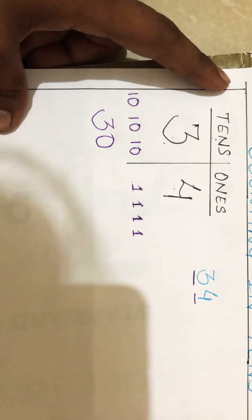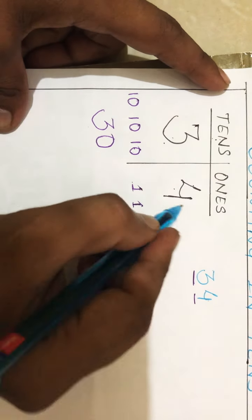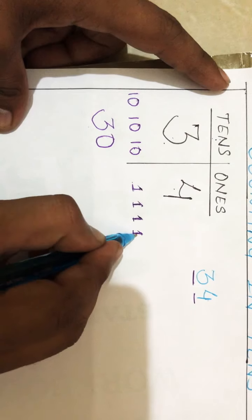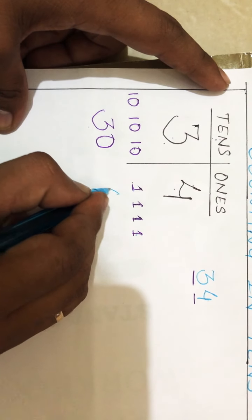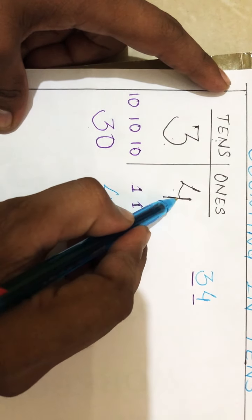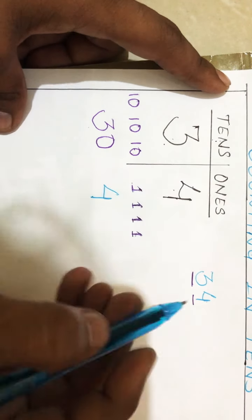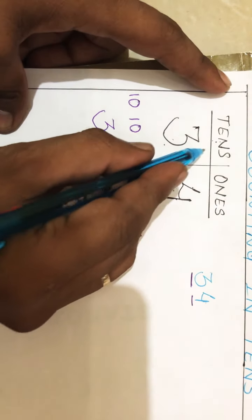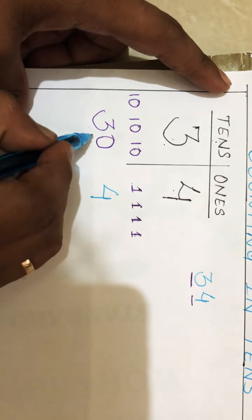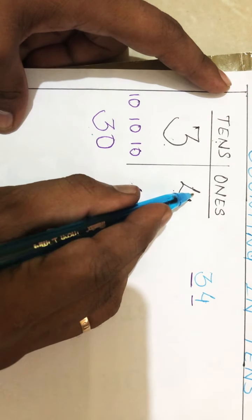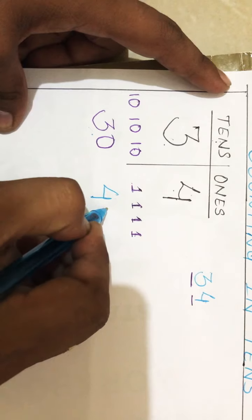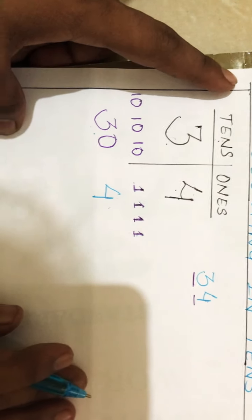So the place value will be thirty, whereas if we count one, one, one four times, we get four as it is. One's place value is its own value. So the place value of three here will be thirty, and four here will be four as it is.